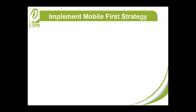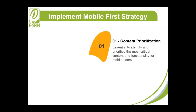Implementing a Mobile First strategy. The successful implementation of a Mobile First strategy requires careful planning and execution. Below are the key steps involved. Content Prioritization is a cornerstone of Mobile First design. Given the limited screen space on mobile devices, it is essential to identify and prioritize the most critical content and functionality for mobile users.